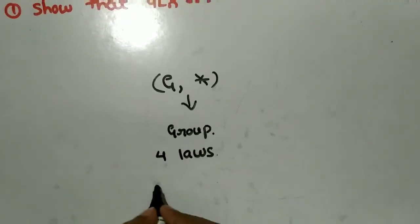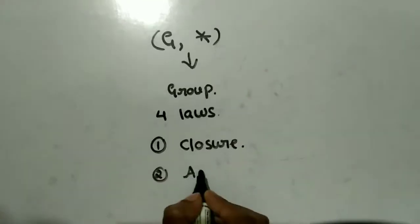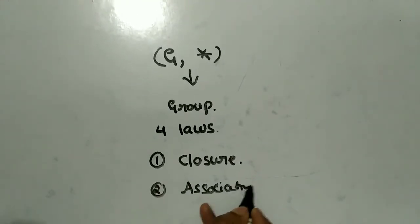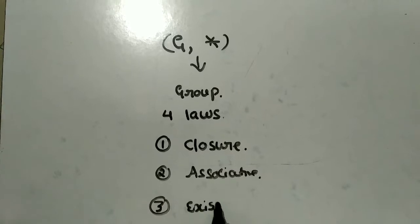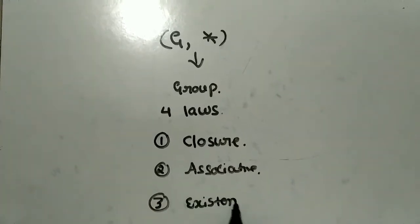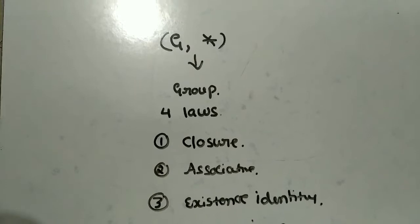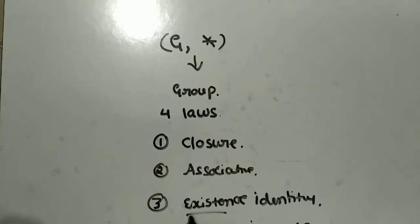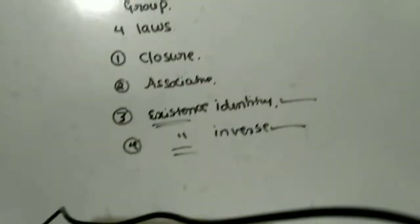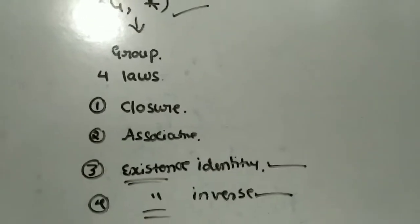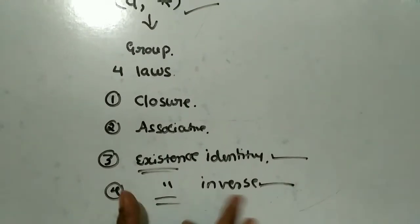What are those 4 laws? First one is closure law, second is associative law, third is existence of identity, and fourth is existence of inverse. Why I say 'existence'? Because in a group, the identity element and the inverse are unique — there is only one identity element and only one inverse.